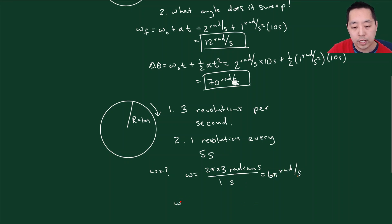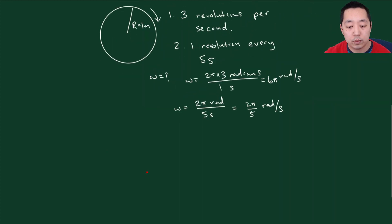And in the second scenario, I'm doing one revolution every five seconds. That means I'm doing two pi radians every five seconds. And that would be two pi over five radians per second. So that's one thing you have to keep in mind, is sometimes you might have to do these conversions between revolutions or rotations into radians.